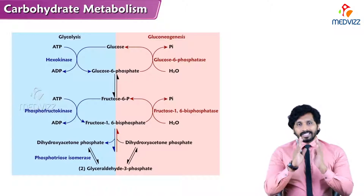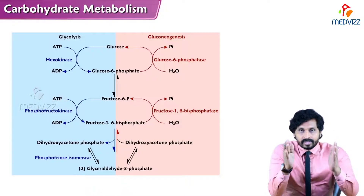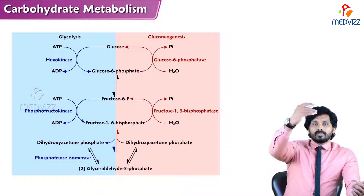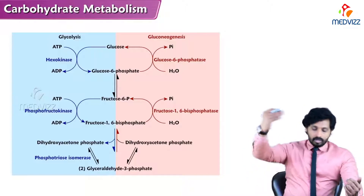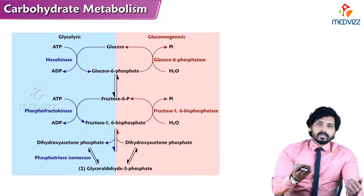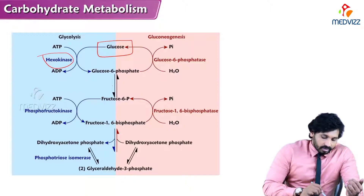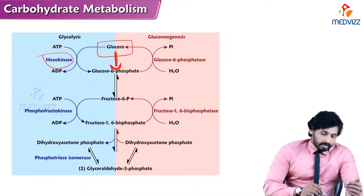I have made a diagram showing glycolysis and gluconeogenesis side by side. Glycolysis means breakdown of glucose — from glucose to form pyruvate — and gluconeogenesis is the synthesis from pyruvate to glucose. In the red color I have mentioned gluconeogenesis reactions and in the blue color I have mentioned glycolysis reactions. The first step involves the enzyme hexokinase, which is an irreversible one-way reaction.